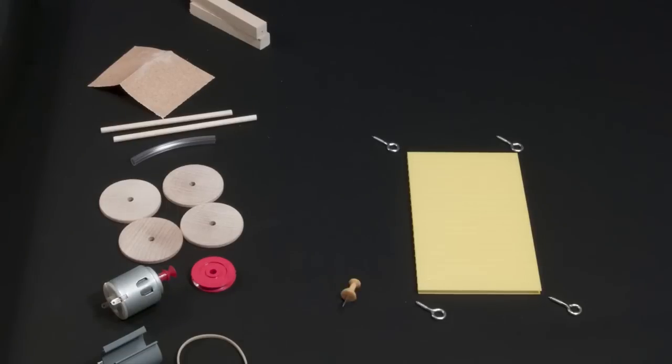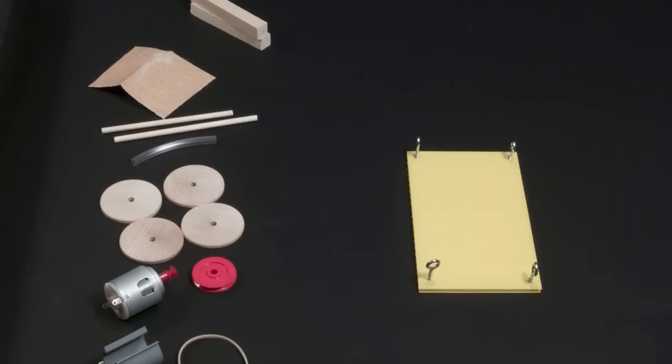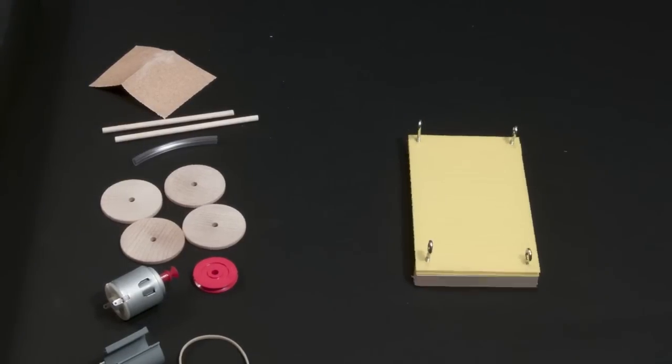Twist the screw eyes through the coroplast and into the wooden blocks. Make sure that the eye of the screws are all sideways.